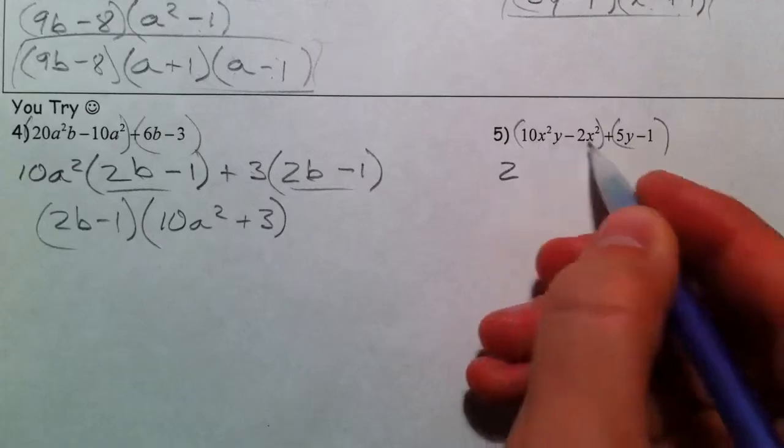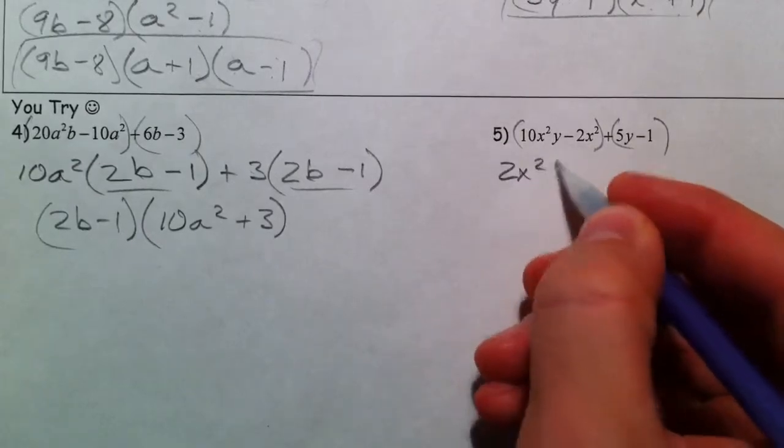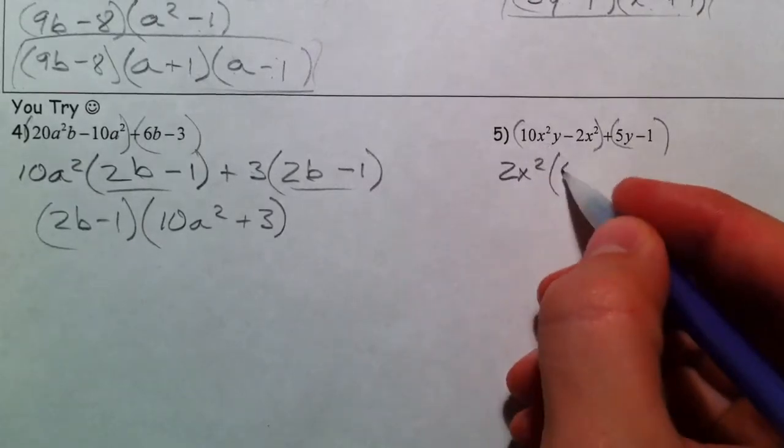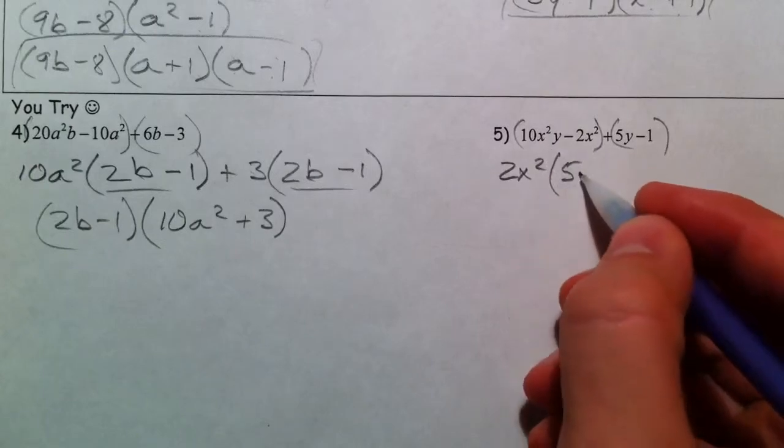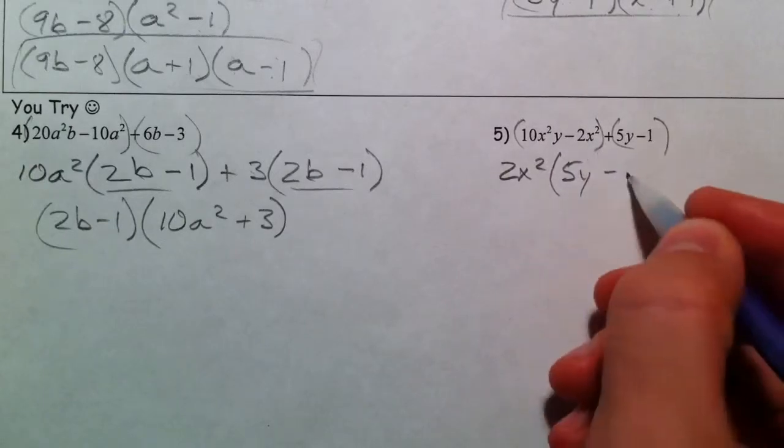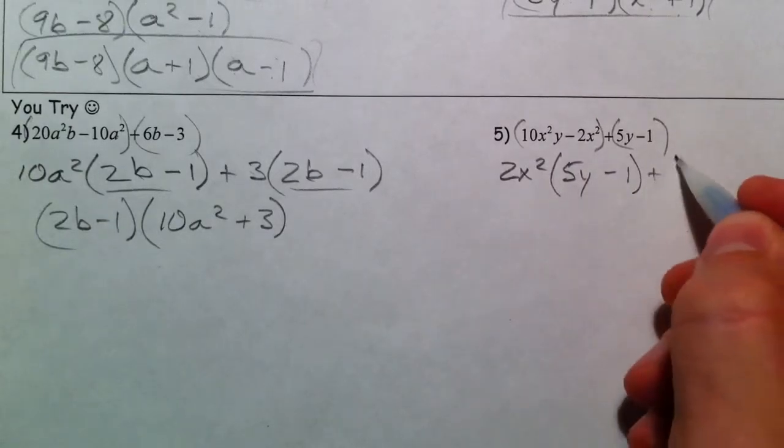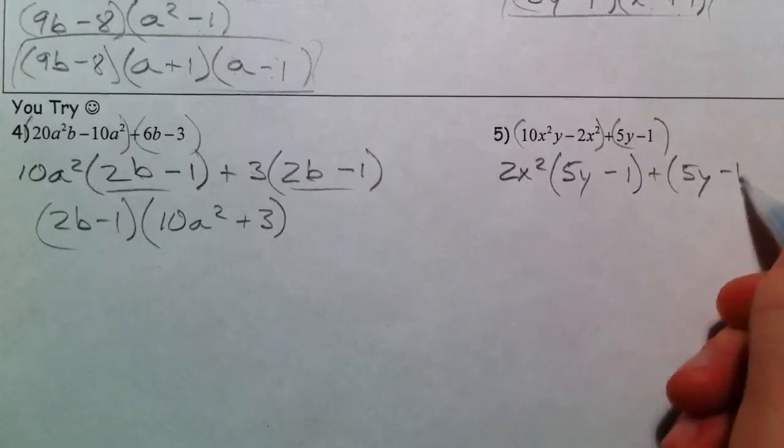We have a 2 in common between the 10 and the 2, and we have an x squared. And that leaves a 5 and a y minus 1. And again, 5y minus 1, we can't take anything out of that, and it matches.